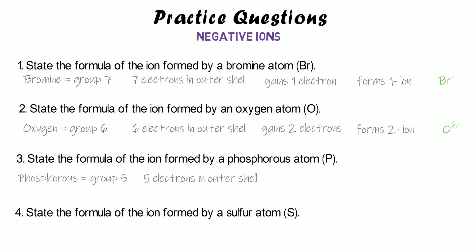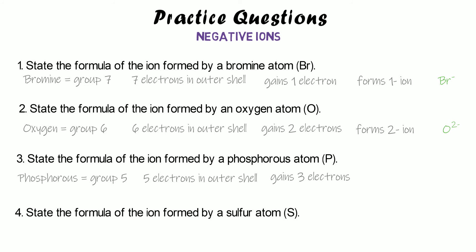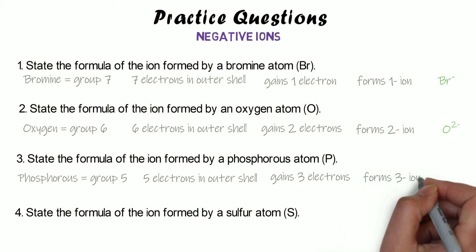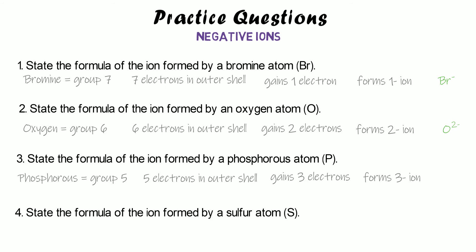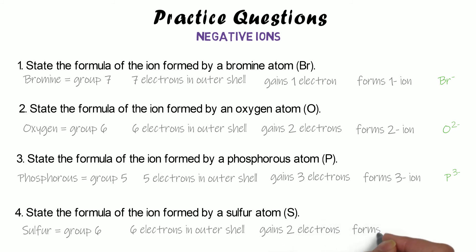Phosphorus is in group five — it has five electrons in its outer shell and wants to gain another three to get a full outer shell. Gaining three electrons means it forms a 3− ion, so the formula is P³⁻. Finally, sulfur is in group six again, with six electrons in its outer shell — it gains two more to get a full outer shell. Gaining two electrons gives it a 2− charge, so it forms a 2− ion and the formula is S²⁻.